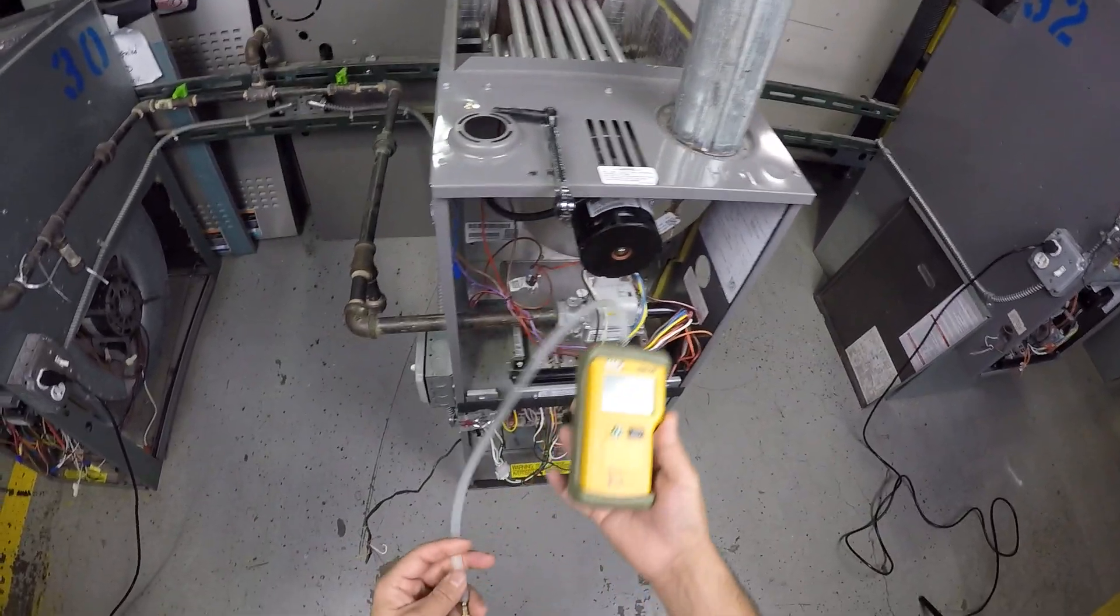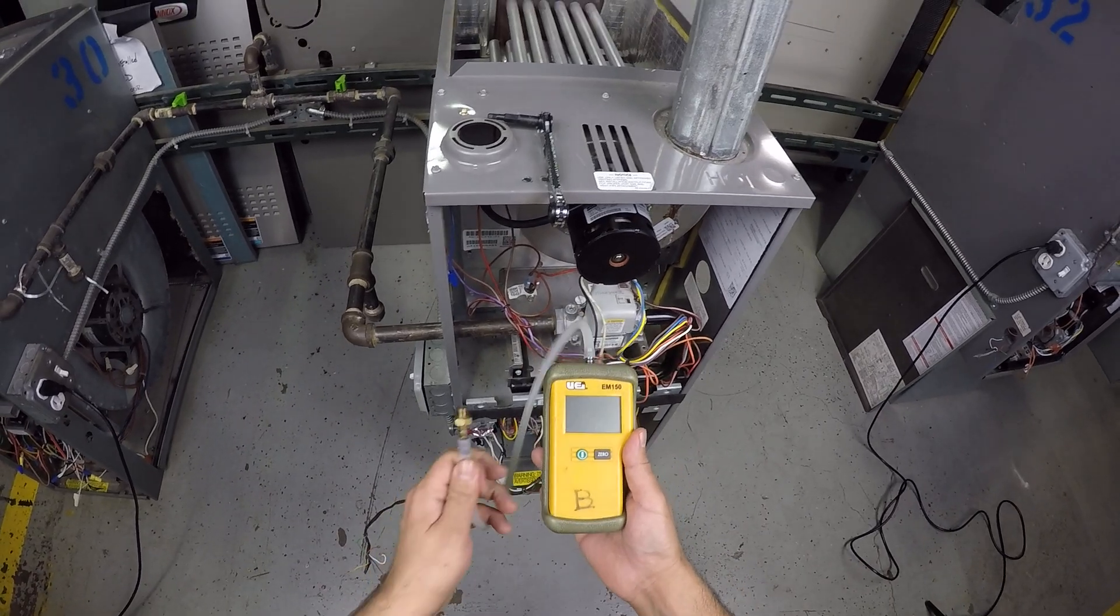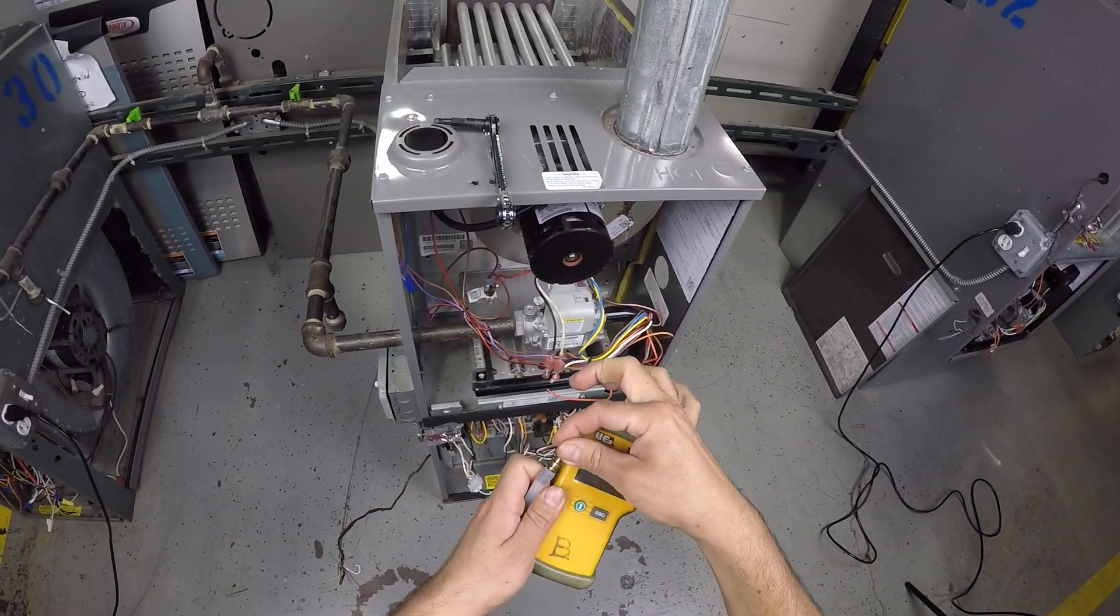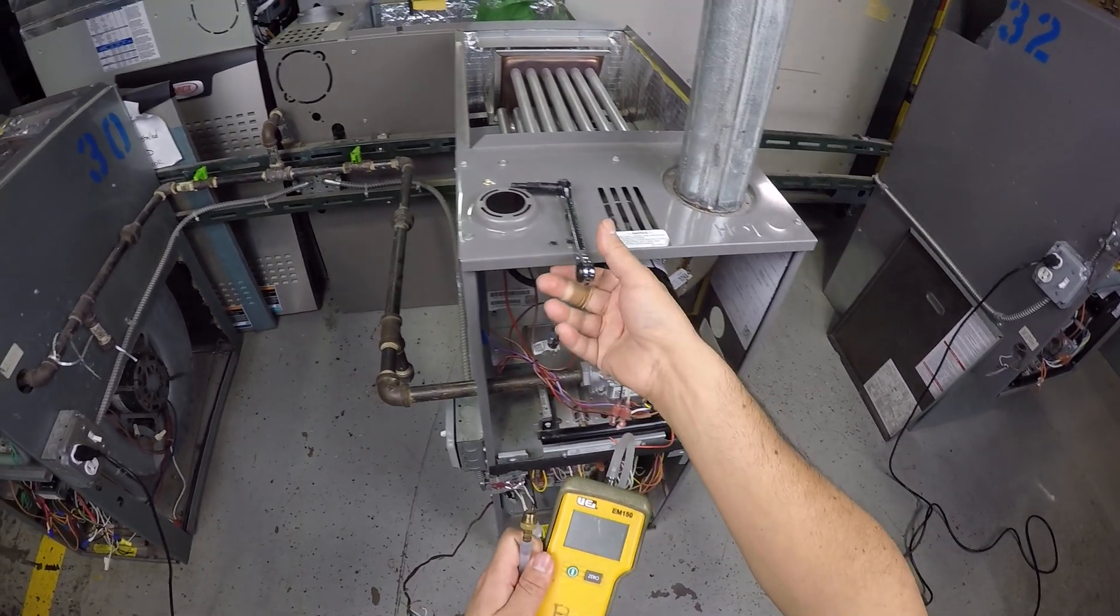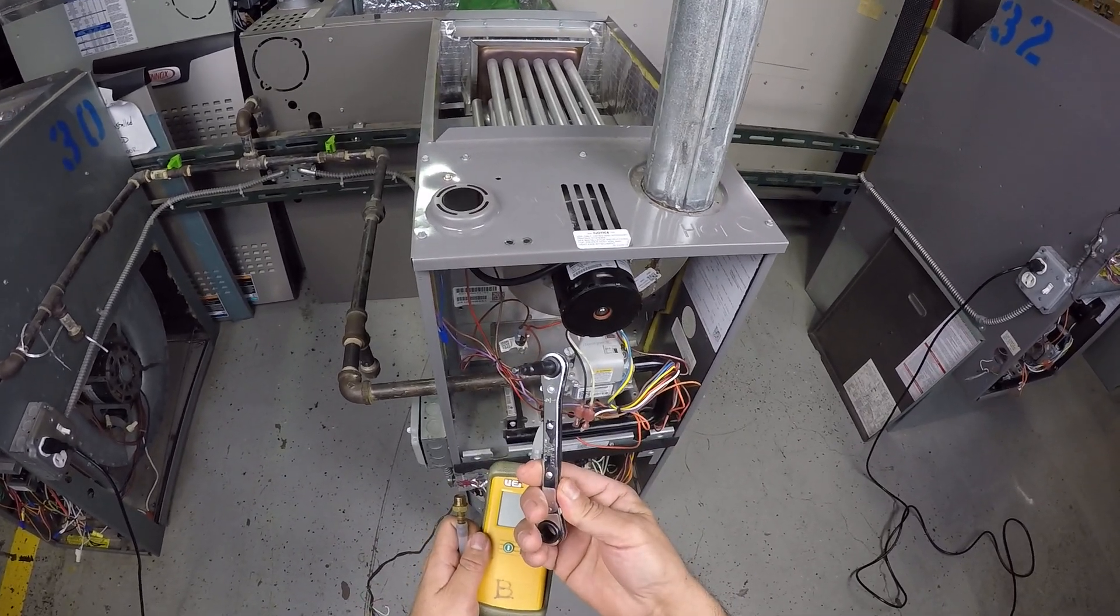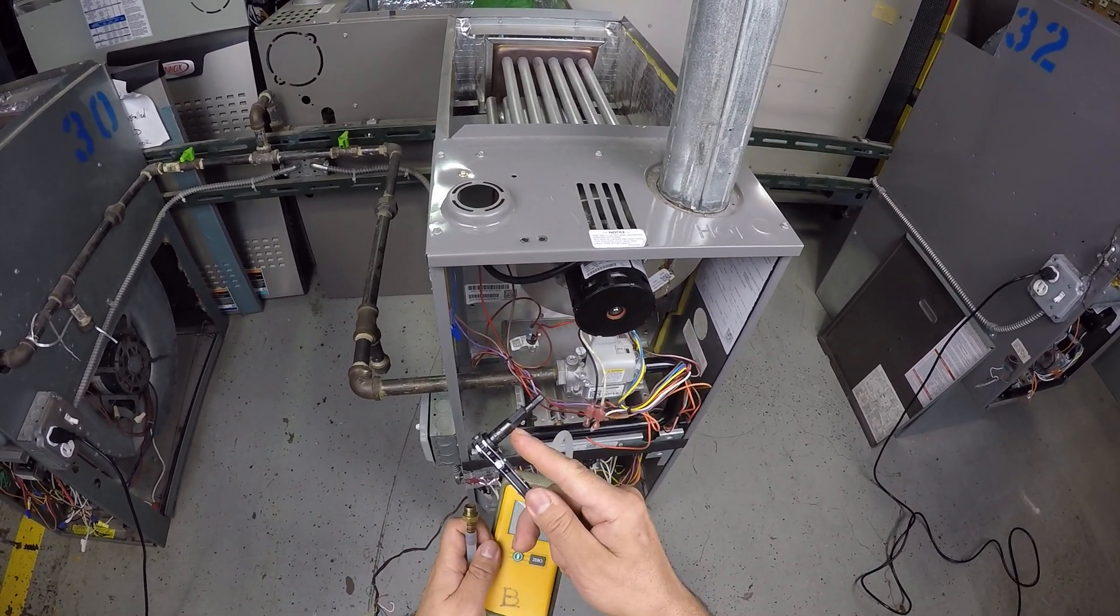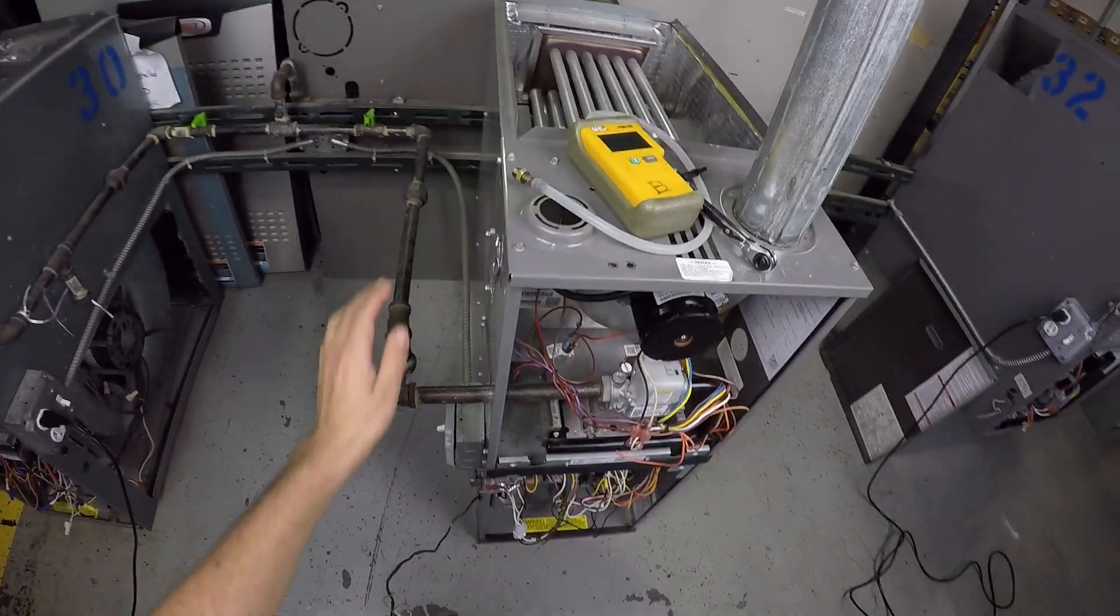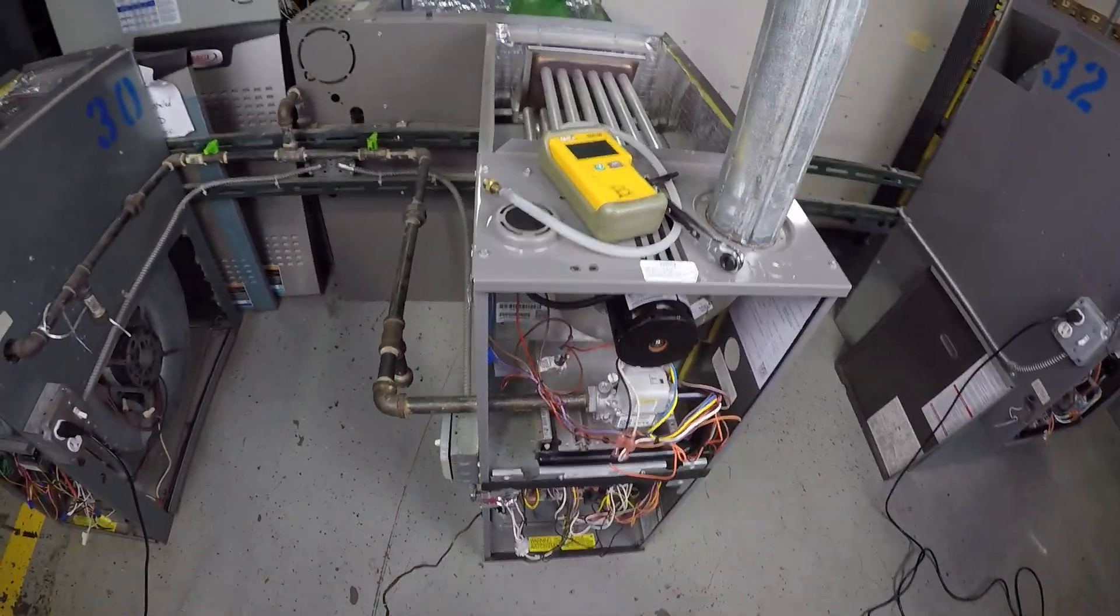First, we're going to need a digital manometer, and also we're going to need a plastic hose and a connector for the gas valve. We're also going to use a service wrench with the hex tool. And of course, we're going to make sure you have gas and the furnace.